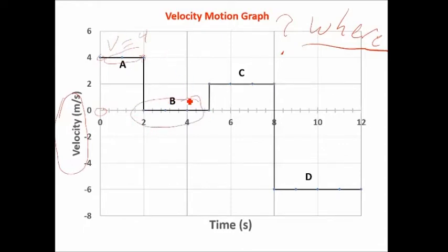Here, you have a velocity of zero. Here, you have a velocity of two. And here, you have a velocity of negative six.